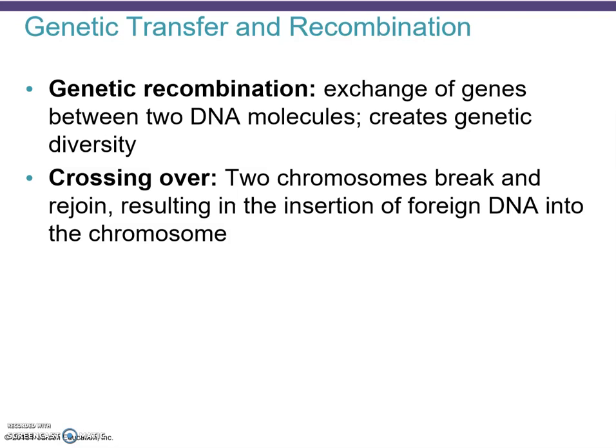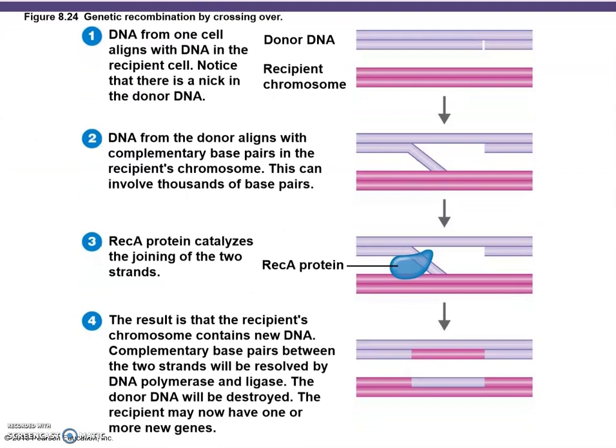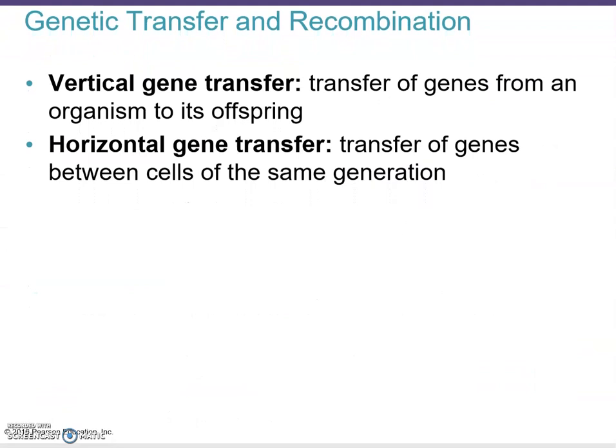Crossing over is a form of genetic transfer where you take two chromosomes and exchange equivalent pieces of those chromosomes. Here's an example: you have a donor DNA and a recipient chromosome DNA, and you're exchanging equivalent pieces. The end result shows the lighter purple gene contains a stretch of pinkish DNA and the pink DNA contains a lavender-purple stretch — those pieces were exchanged due to crossing over.